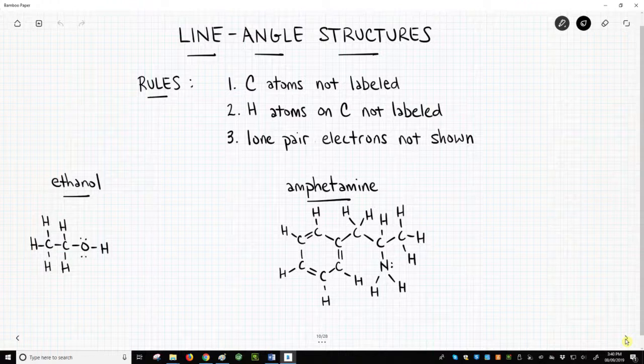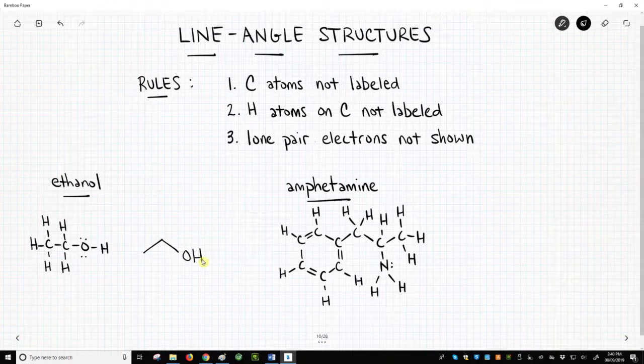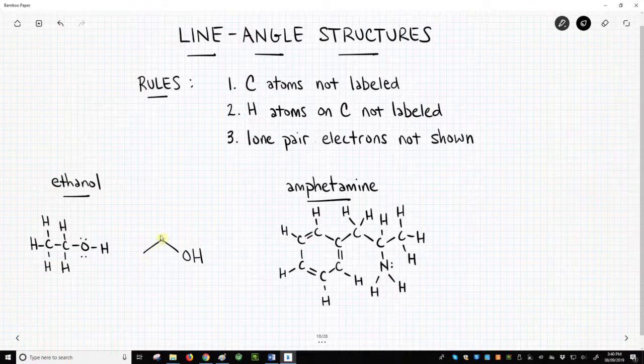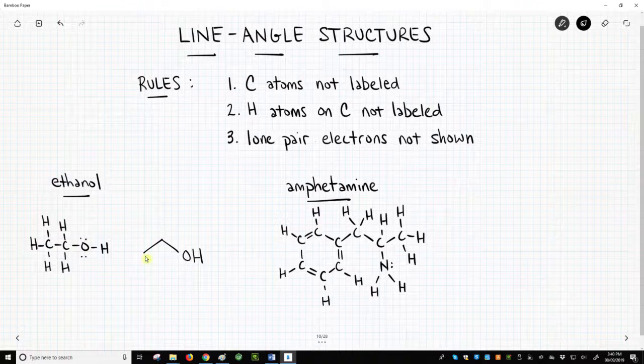The line-angle structure for ethanol is this. That's it. The first carbon is here. It is bonded to the next carbon, which is bonded to the oxygen. We have omitted the hydrogen atoms and the lone pairs on the oxygen. Note that I have drawn this with a zigzag.